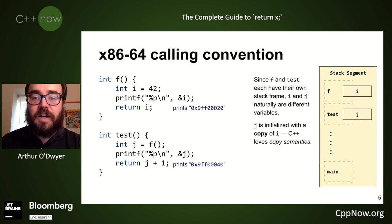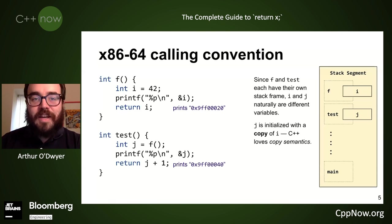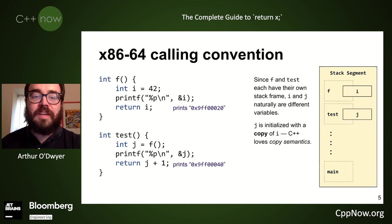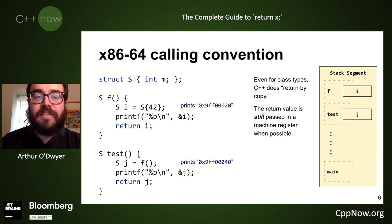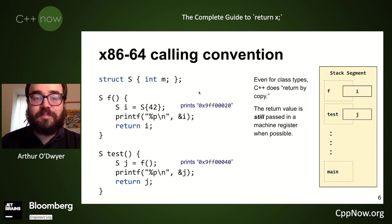Since f and test each have their own stack frame, i and j are different variables. i is on f's stack frame, j is in the stack frame of test. C++ loves copy semantics — when we pass things to functions we make copies, when we return things from functions we get copies. They are at least semantically at different locations in different stack frames, even for class types. Here I have a struct S containing an integer member m, returning it — and that return value is still passed in a machine register when possible.